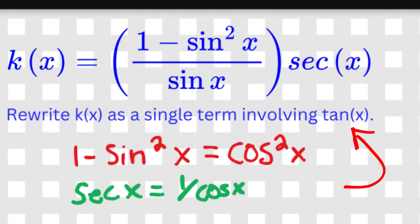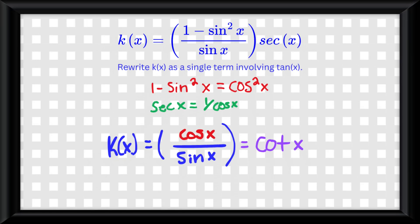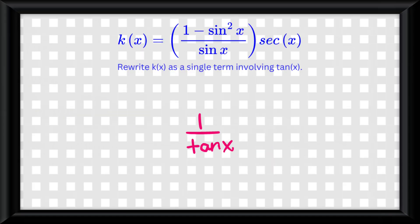But we need to simplify it in terms of tangent as the question asked, so we know cotangent of x is equal to 1 over tangent of x, so this is our final answer. A trig identity like this is guaranteed to show up on your exam, so at the end of this video, there is a handful of them for you to try.